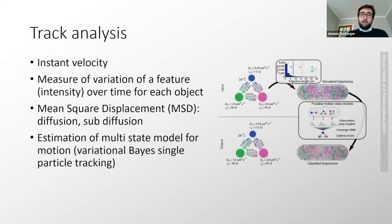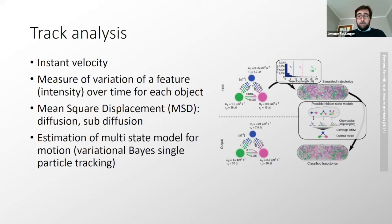Once you have tracks, you can analyze their output: instantaneous velocities, variation of features such as intensity over time, and mean square displacement (MSD) to extract diffusion, sub-diffusion, or drift parameters. You can also estimate multi-state motion models — for example, a single particle cycling between a diffusion-only state and a drift-plus-diffusion state when it moves along a microtubule driven by a motor, with probabilities of transitioning between motion types.